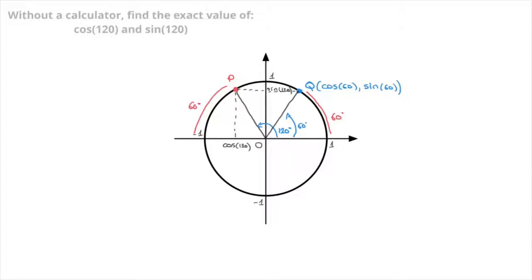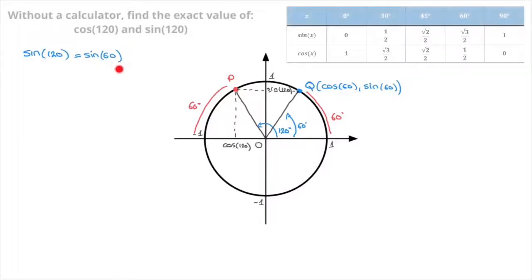Now that that's done, we compare the coordinates of both point P and point Q. It's quite clear that point P and point Q have the same vertical coordinate. The vertical coordinate of point P was sine of 120 degrees, and the vertical coordinate of point Q is sine of 60. Those two values of sine must therefore be equal — sine of 120 equals to sine of 60. Sine of 60 has a well-known value: it's equal to the square root of 3 over 2.